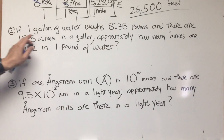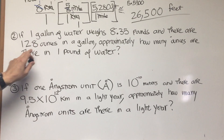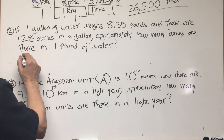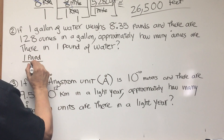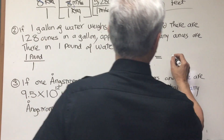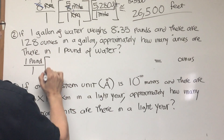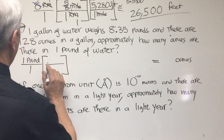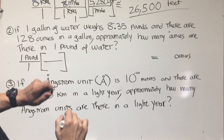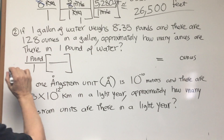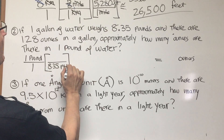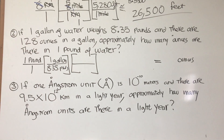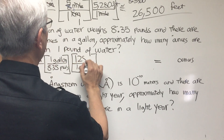Let's go to the second conversion problem. One gallon of water weighs 8.35 pounds and there are 128 ounces in a gallon. Approximately how many ounces are there in one pound of water? We want to start with one pound of water and wind up with ounces. Our first conversion factor: 8.35 pounds is in one gallon of water. Our second conversion: there are 128 ounces in one gallon, so we have one gallon in the denominator and 128 ounces in the numerator.